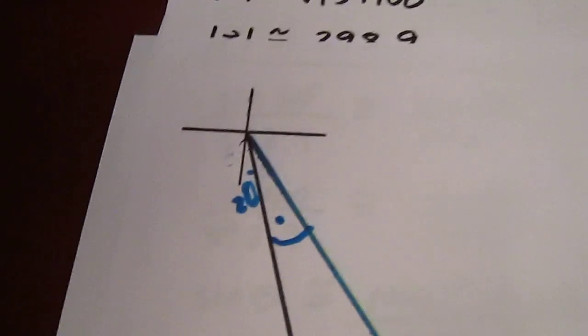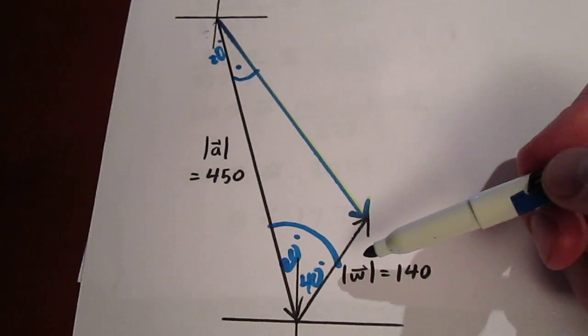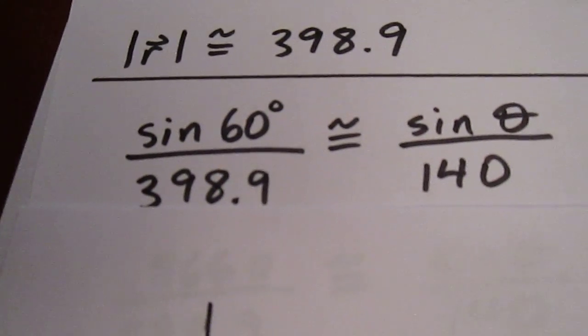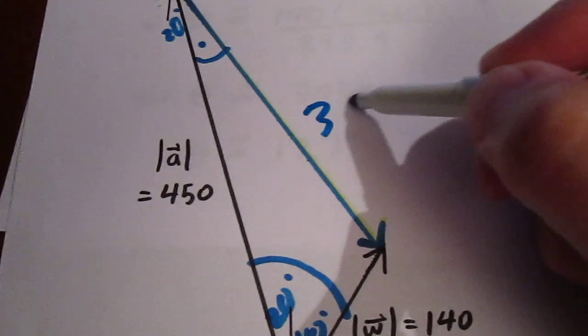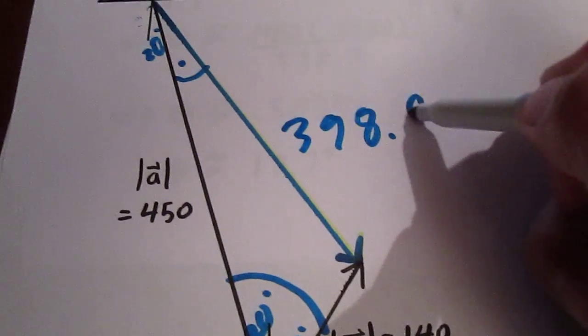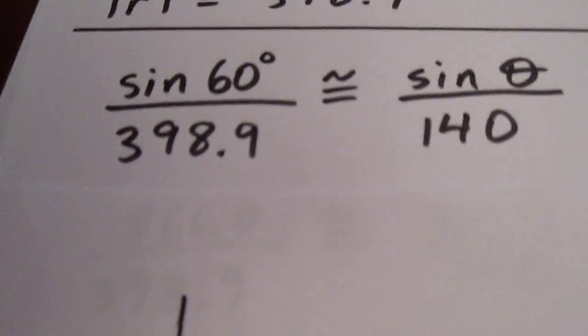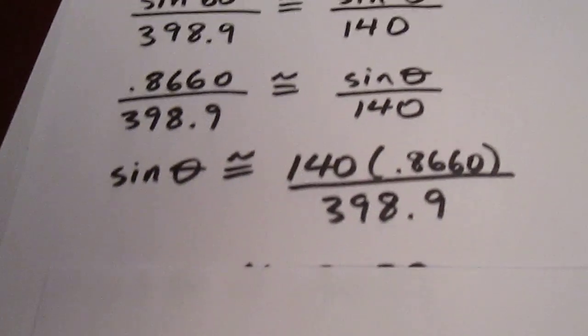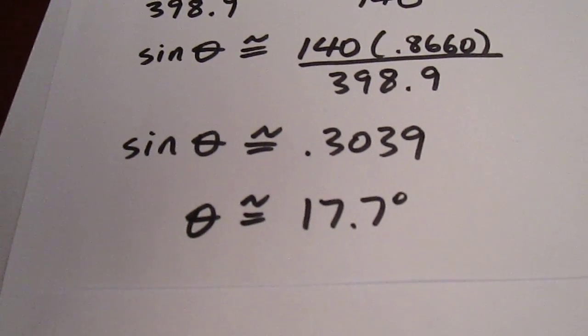So we consider the sine law in this triangle. We see that the sine of 60 degrees over 398.9 is approximately equal to the sine of theta, we'll call this theta over 140. We then do some arithmetic and we see that the sine of theta is approximately 0.3039, which means theta is approximately 17.7 degrees.